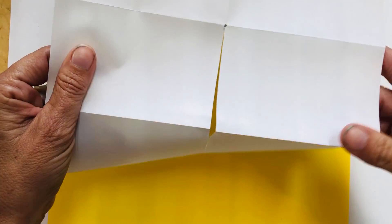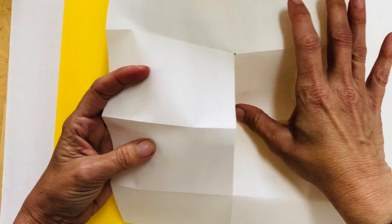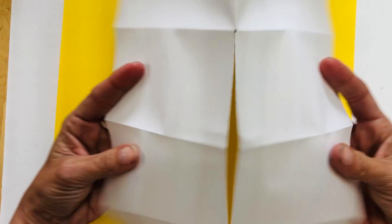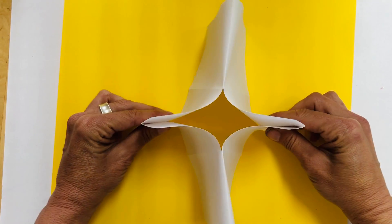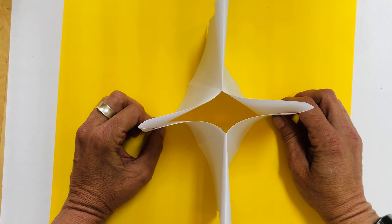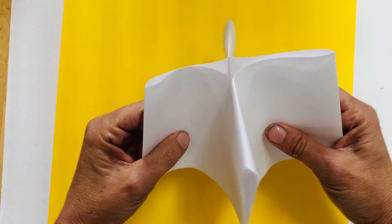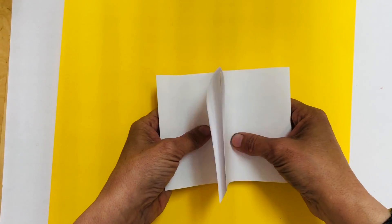So after you do that it's going to make sort of a little tent shape with this cut in the middle. So you're going to try to pull those two pages out so you have this four cornered piece. Then once you get those four corners you're going to flatten it out.